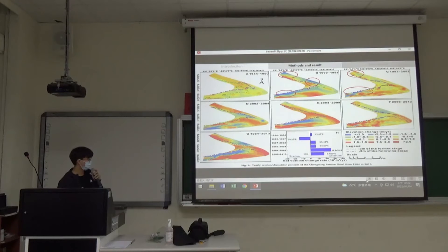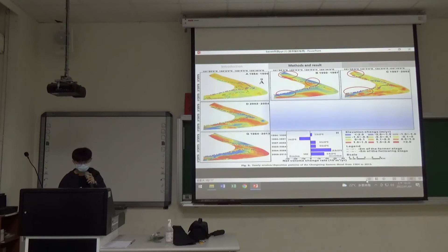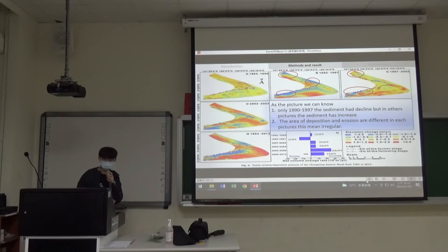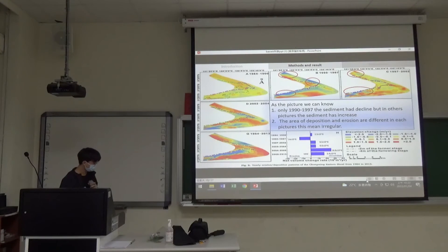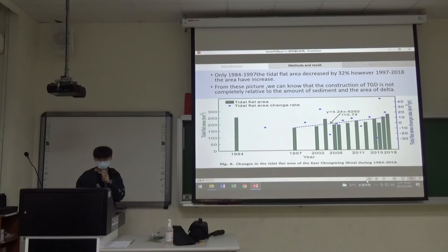Picture H is the net volume change rate. Only 1990 to 1997 was decreasing, but others were increasing. From the pictures we can see that the area of deposition and erosion are different in each picture. This means it's irregular.